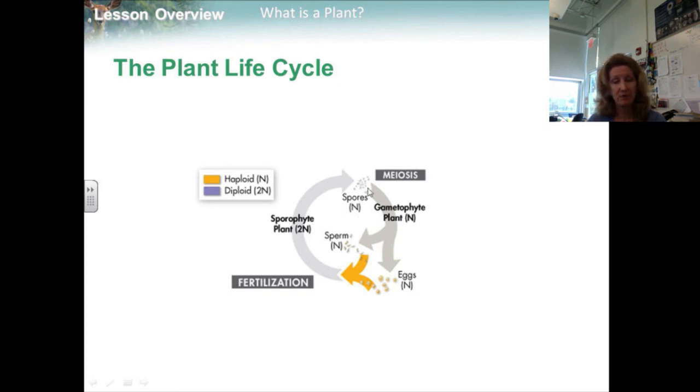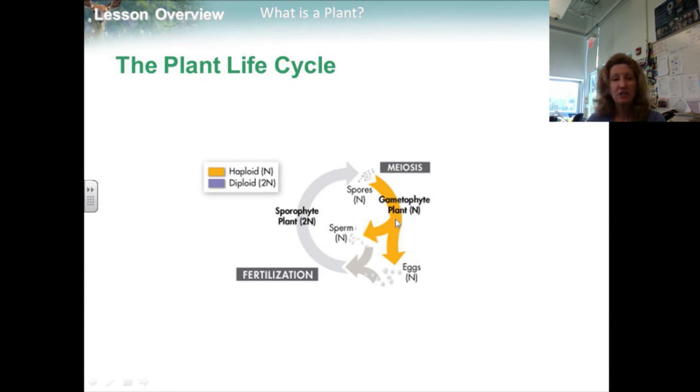They produce haploid spores through meiosis. These spores grow into multicellular structures called gametophytes. Each gametophyte produces reproductive cells called gametes, sperm and egg cells. During fertilization, a sperm and egg fuse with each other, producing a diploid zygote that develops into a new sporophyte.